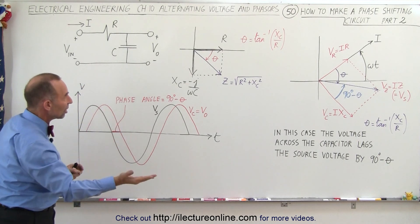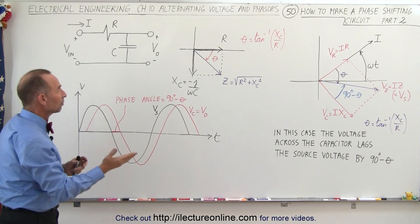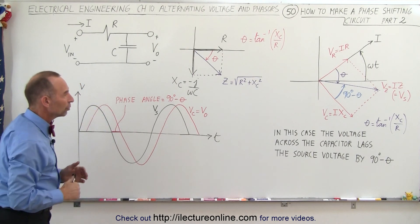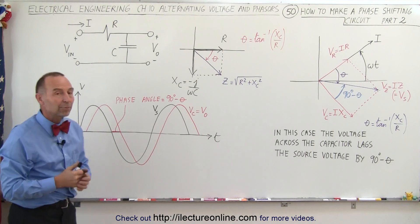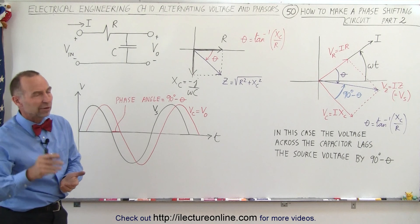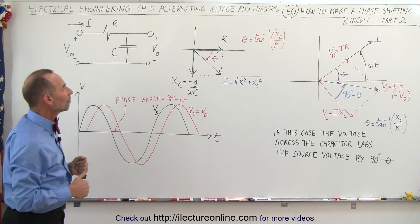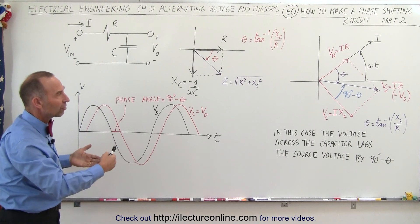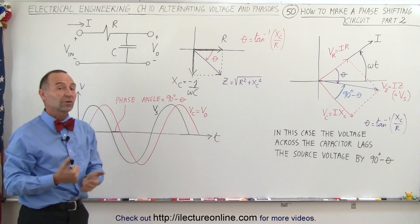So here we change the phase angle of the output voltage in the opposite direction to be behind the phase angle of the input voltage. So there's the two types of phase shifting circuits. We can also use an inductor, or later on we'll show you how to use an inductor in a similar fashion, but now we're going to try to show you some examples of how to actually apply this on some actual circuits.